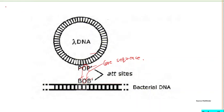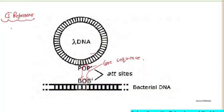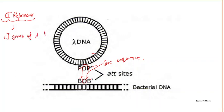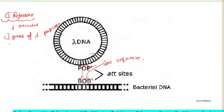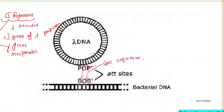Lysogeny is maintained by CI repressor. The CI repressor is encoded by the CI gene of lambda prophage. The CI repressor blocks expression of genes responsible for the lytic cycle, thereby maintaining lysogeny.